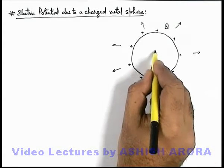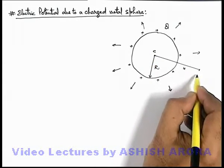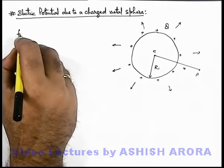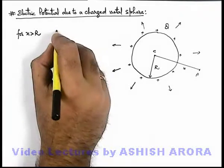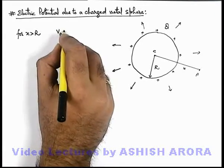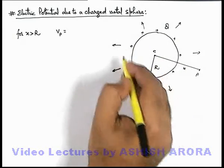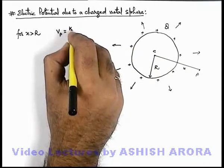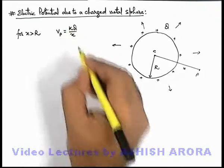From its center, at a distance x outside, if we find out the potential at point P, then we can directly write for x greater than r: the potential at point P can be given by the result of a point charge, as if the whole charge is concentrated at its center. So the electric potential will be kq/x.